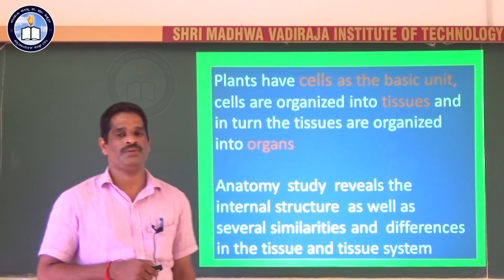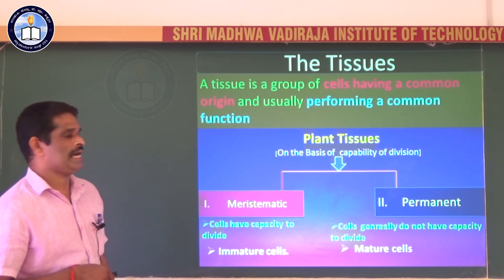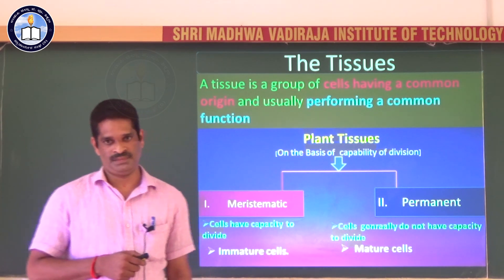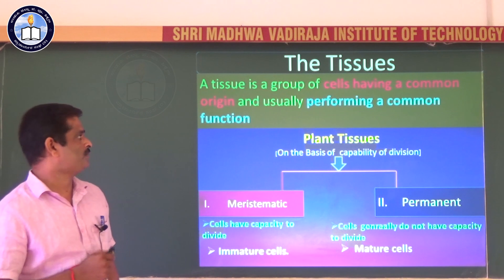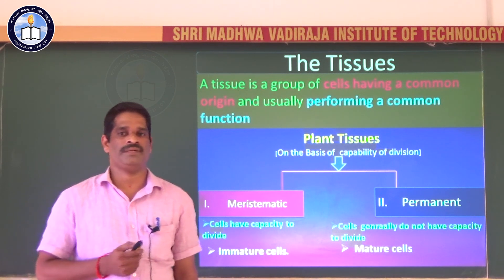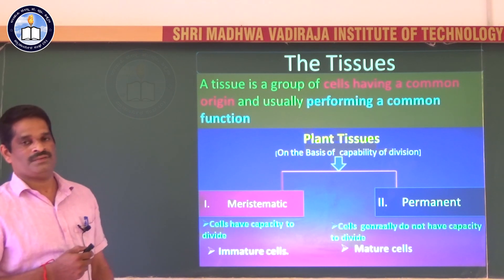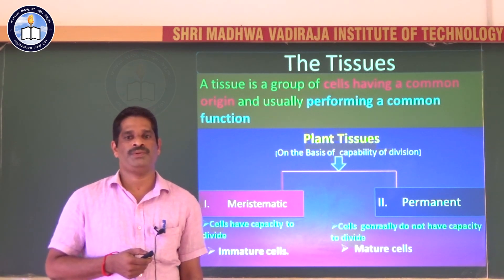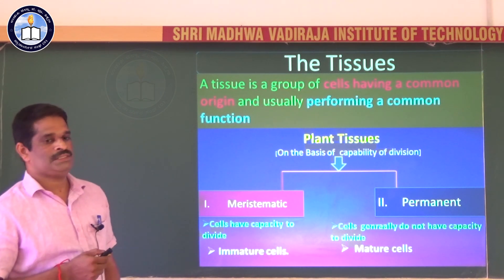The study of anatomy reveals the internal structure as well as several similarities and differences in the tissues and tissue systems. Hence, here we need to know what a tissue is. Tissue is a group of cells having common origin and usually performing common function. In order to call something a tissue, it must be a group of cells having common origin and performing common functions.